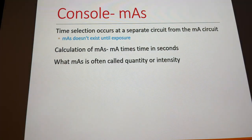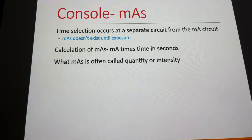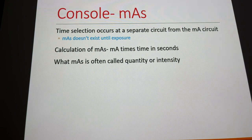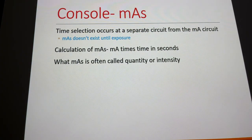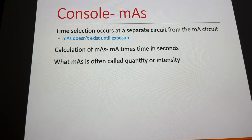Time selection occurs in a separate circuit, between the step-up transformer and the auto transformer. MAS doesn't exist until exposure. The calculation of MAS is simply MA times time in seconds. What we often call MAS is intensity — not in the sense of power, but just raw numbers of photons.